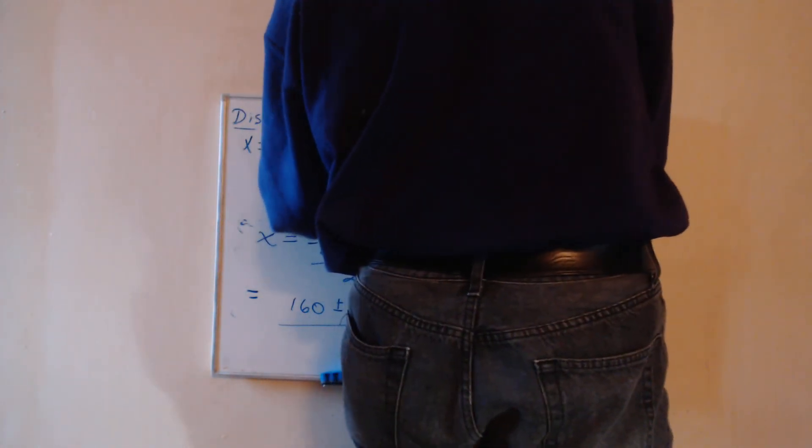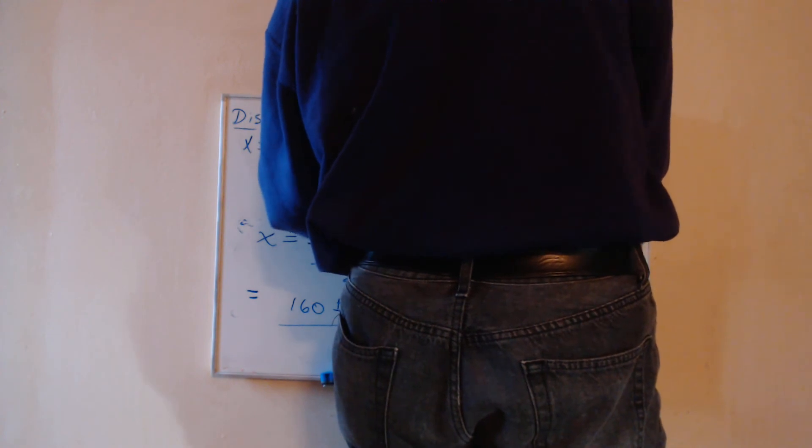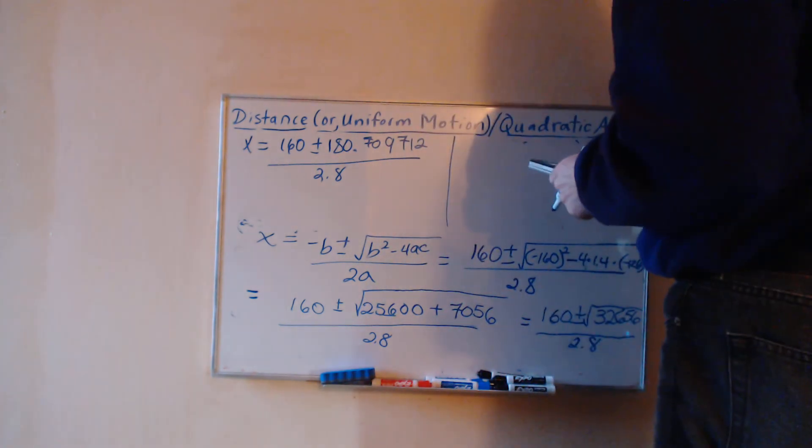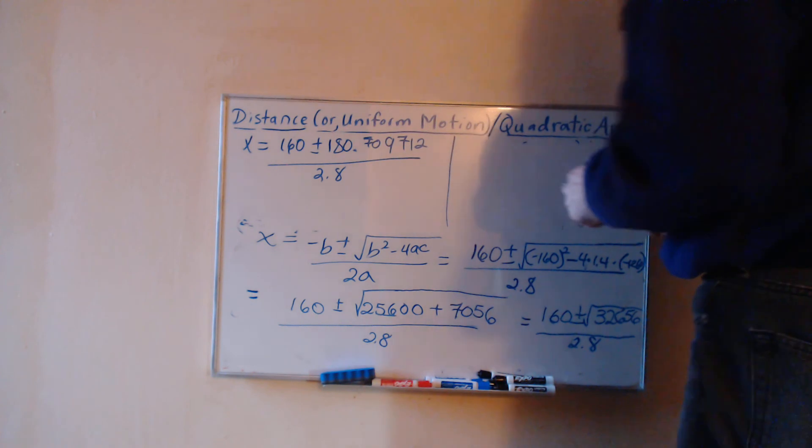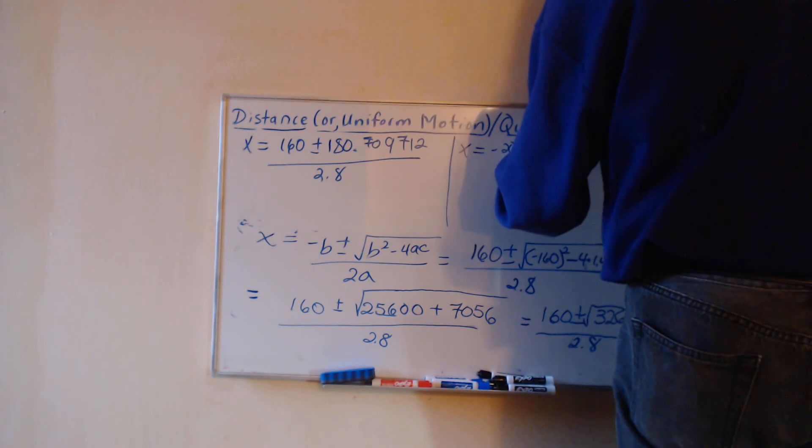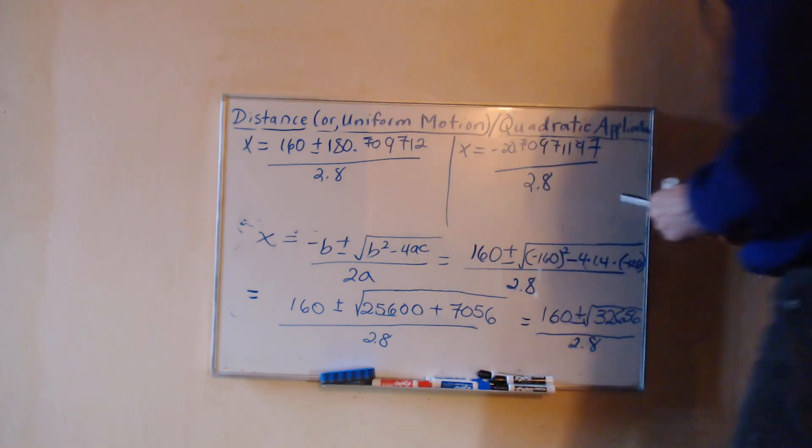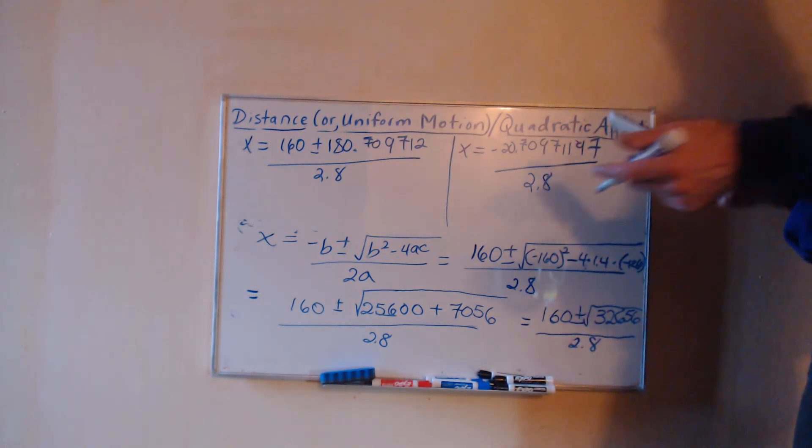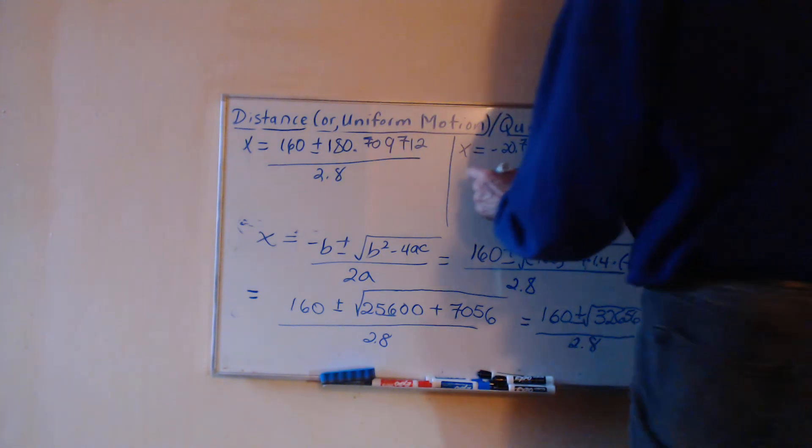We had 160 plus or minus 180.709712 all over 2.8. We do the subtraction, we've got negative 28.709719, we're dividing that by a positive 2.8. So even if we rounded to an integer, we'd be getting a speed of about negative 7, and we'd be talking about that in miles per hour.